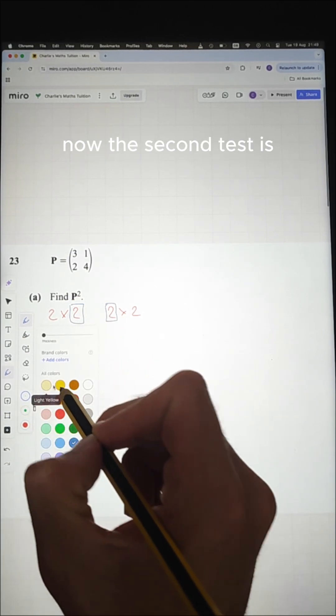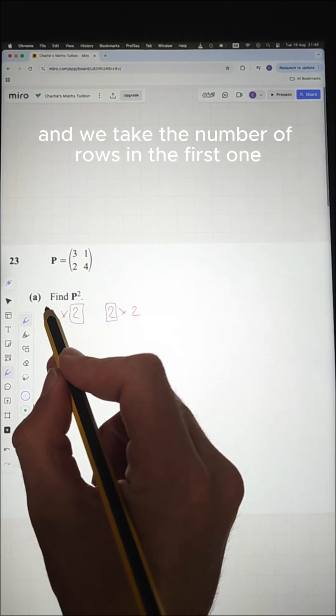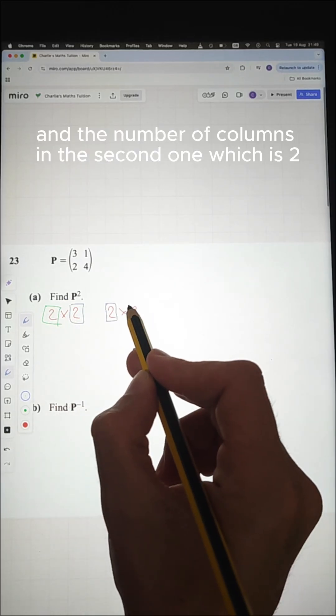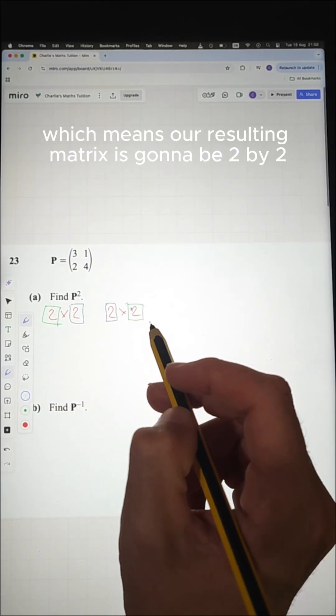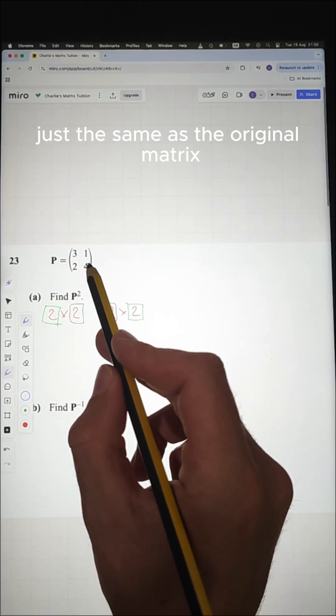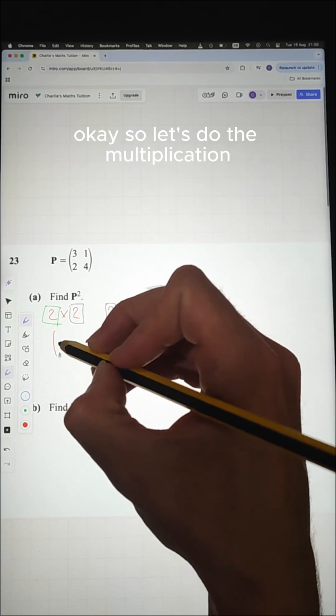Now the second test is how big is our resulting matrix going to be, and we take the number of rows in the first one which is two and the number of columns in the second one which is two, which means our resulting matrix is going to be two by two, just the same as the original matrix. Okay, so let's do the multiplication.